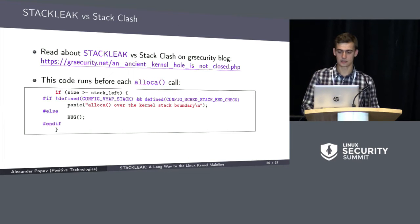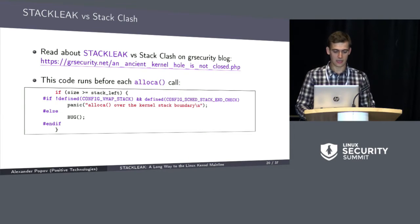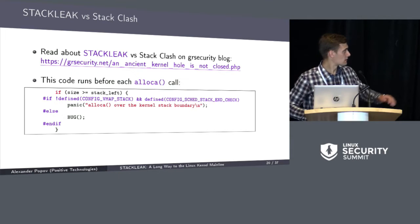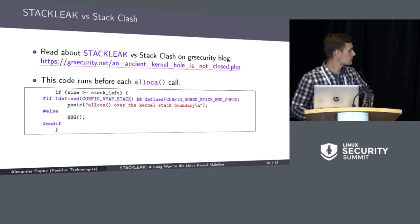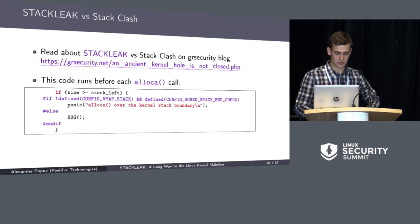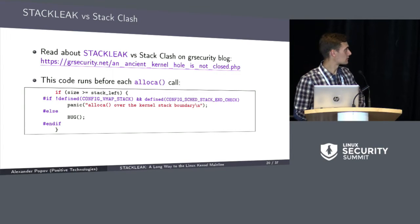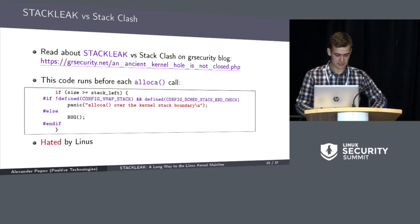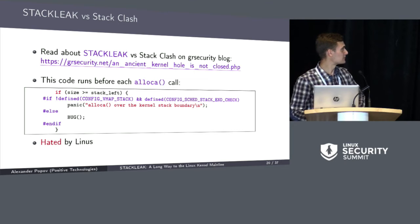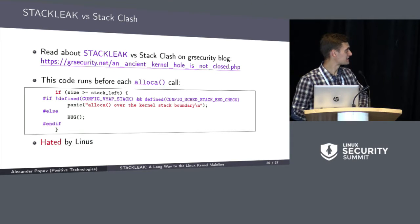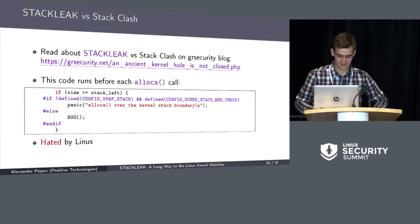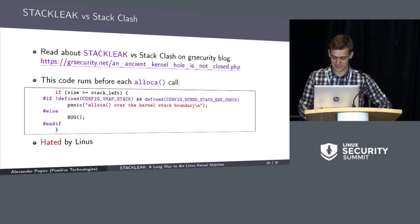What does StackLeak do about that? Before every alloca call, there is code running: if the allocation size is bigger than or equal to the space left, we call panic or BUG, depending on our config options — and this is hated by Linus, as you may guess. I will cover that a little bit later.